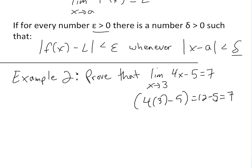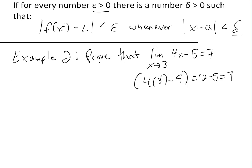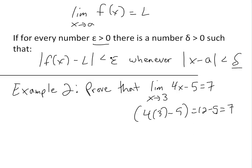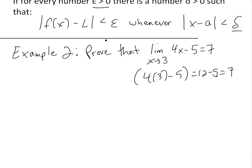In example one, I used an actual interval with numerical numbers to illustrate how you find the limit, but that wasn't concrete proof. So now we'll show the concrete proof by looking at the basic epsilon-delta definition. We have to find this delta in such a way that the difference between f(x) and the limit is less than epsilon whenever the condition on x minus a holds.